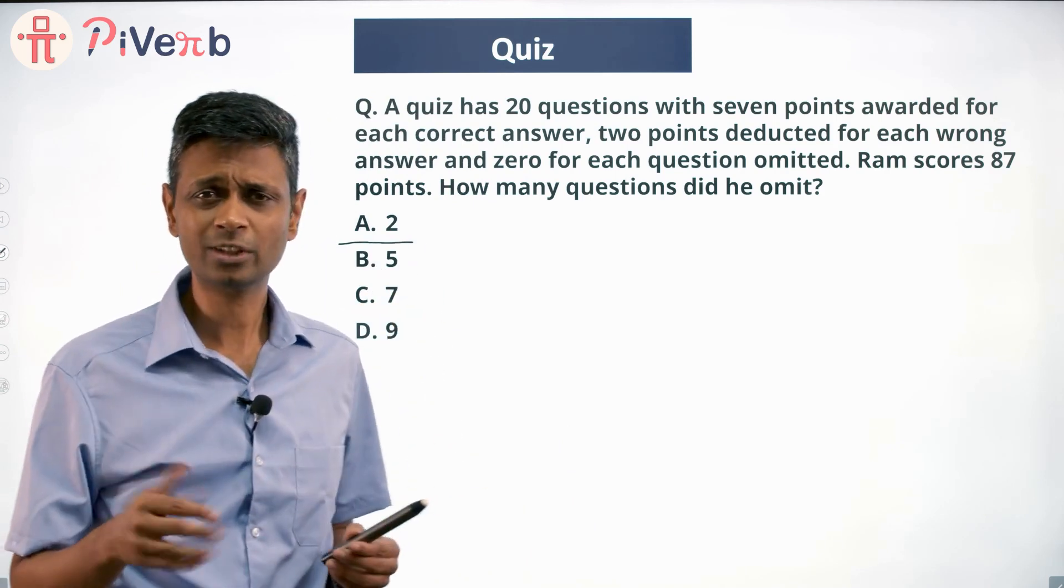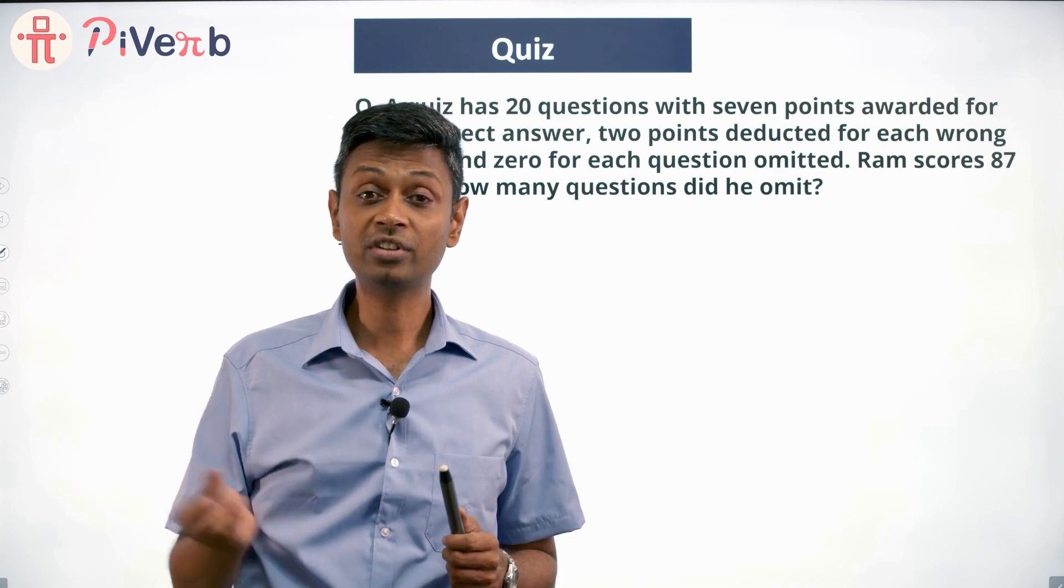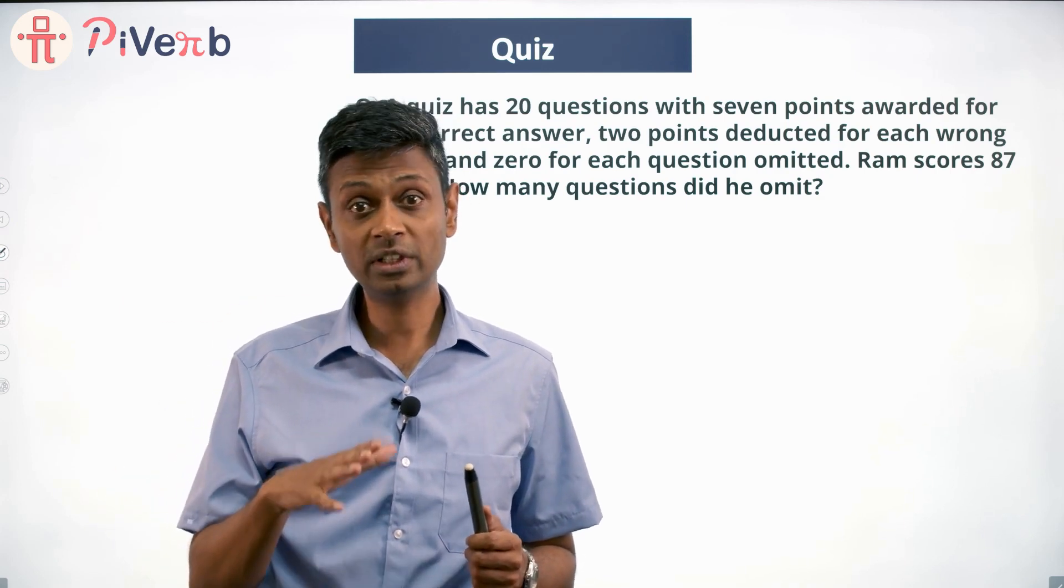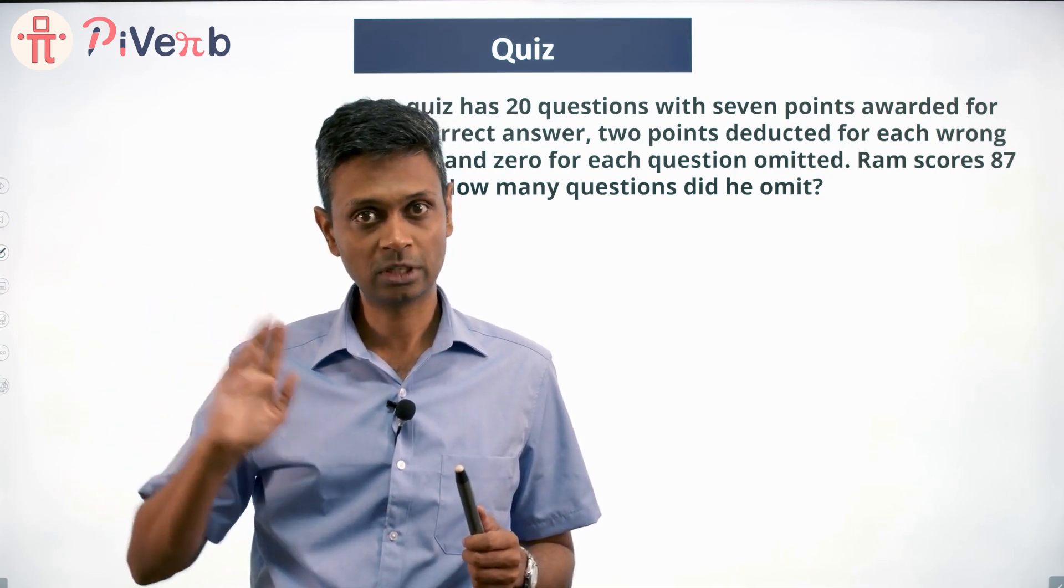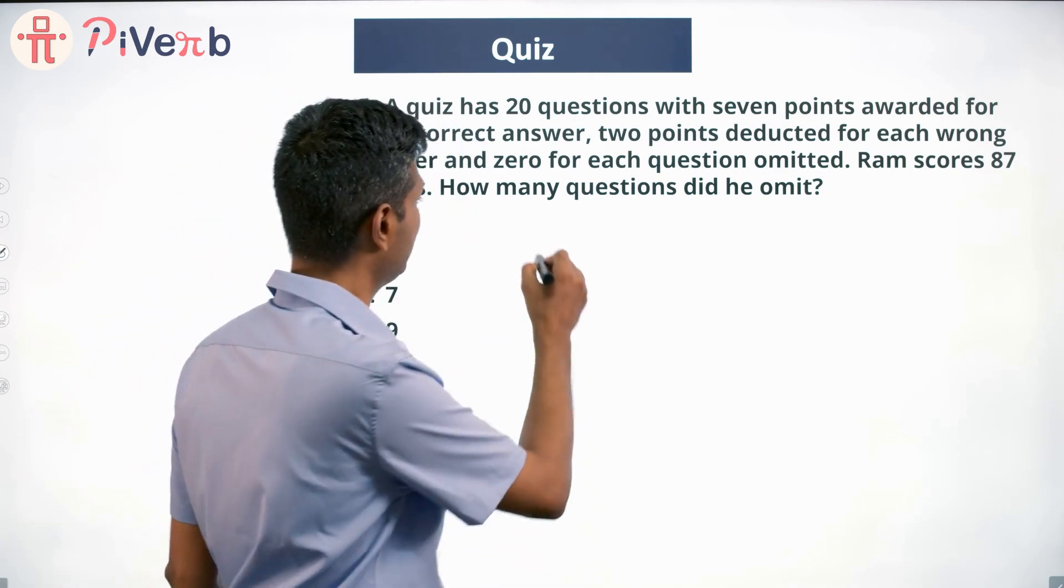Assume, and then if this works, brilliant, we mark that as a choice. If this does not work, then we'll try another method. So he does not attempt two questions, that means he attempted 18 questions.